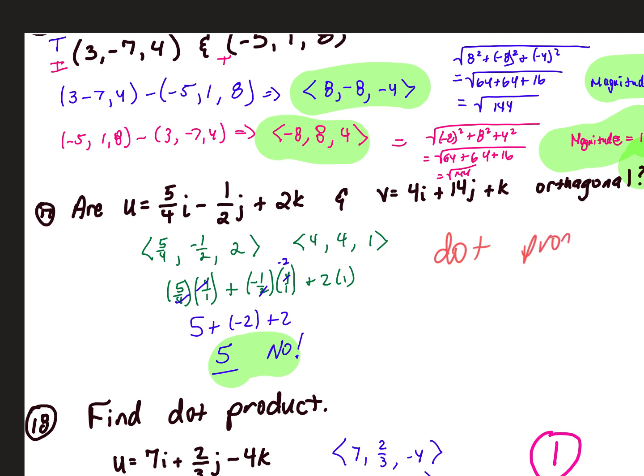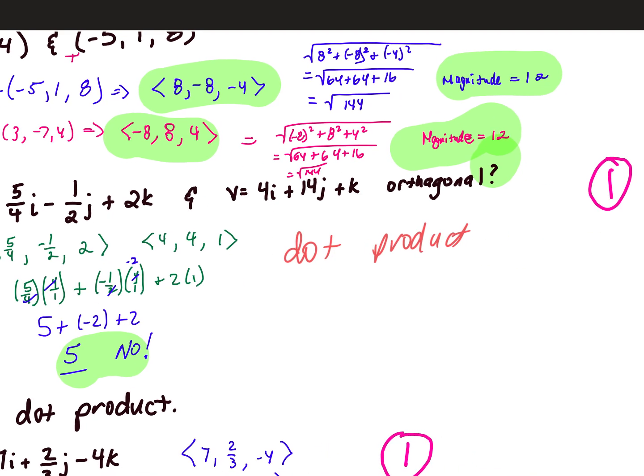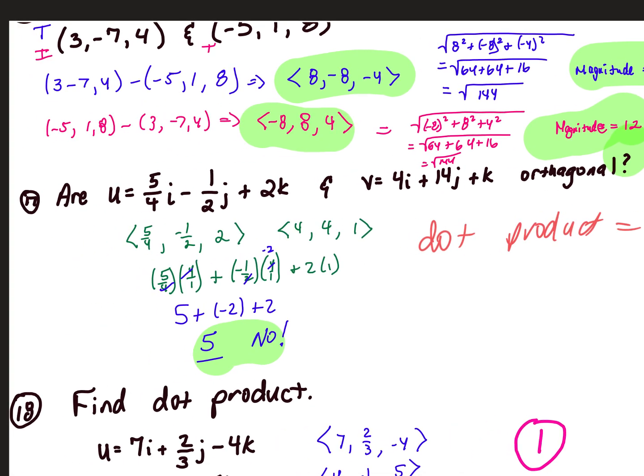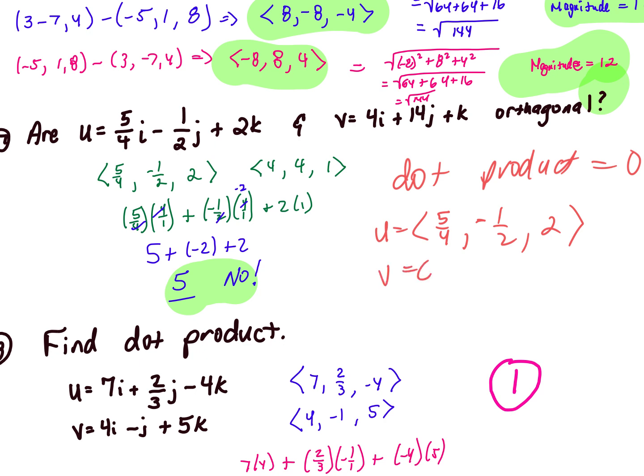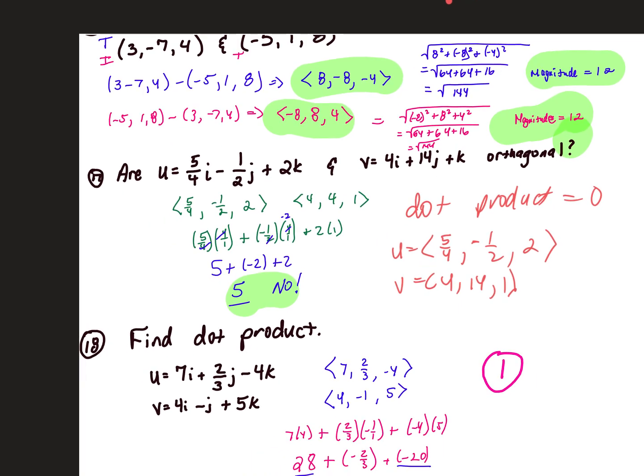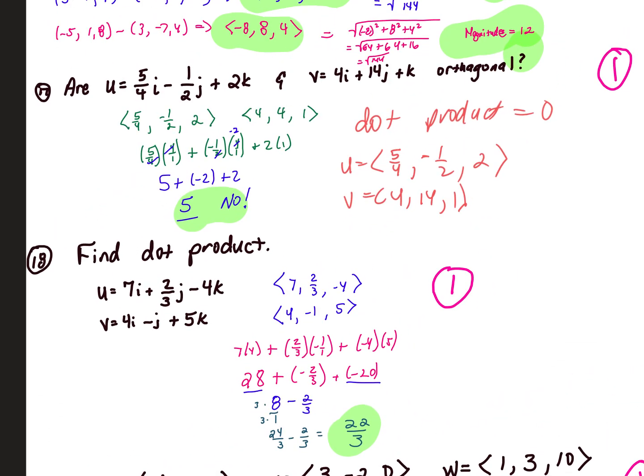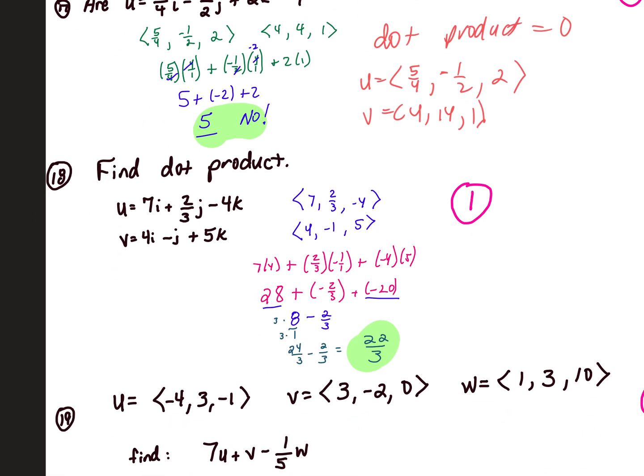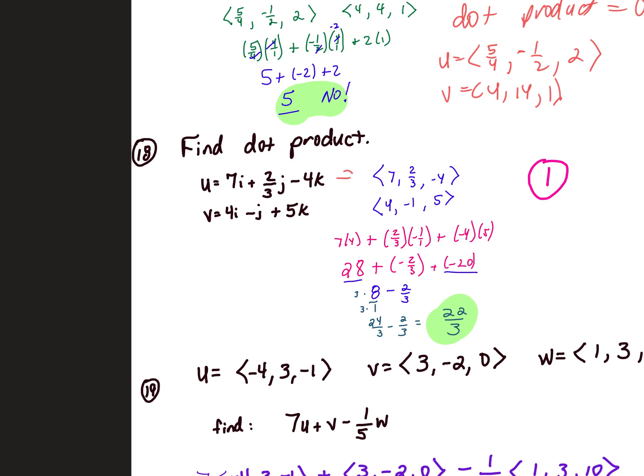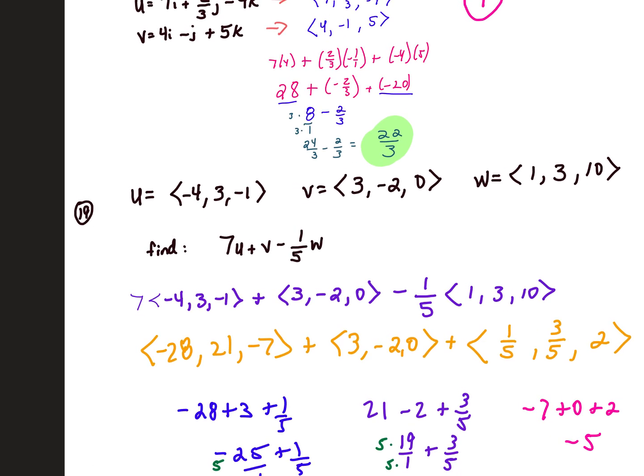If something is orthogonal, the dot product is equal to 0. Remember, if you have a vector that looks like this, I would rewrite it and say that U is 5 fourths, comma, negative 1 half, comma 2, and V would be 4, 14, and 1. Remember, if no letter is represented, then it is a 0. So if the dot product is 0, then it's orthogonal. If it's not, it's no. So again, here's a dot product. I would rewrite your vectors into this form so you can see it a little better.